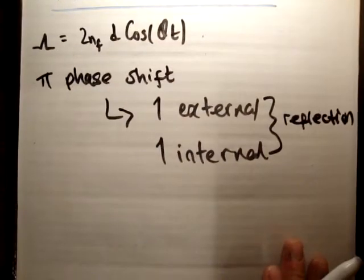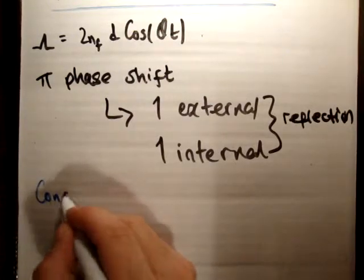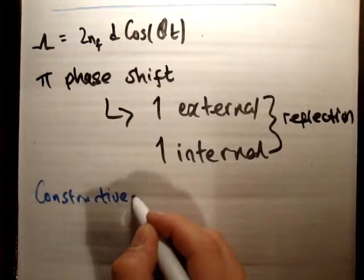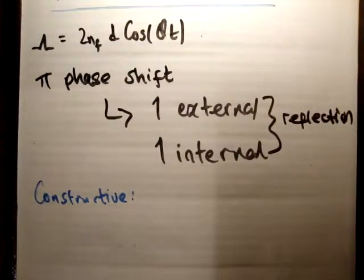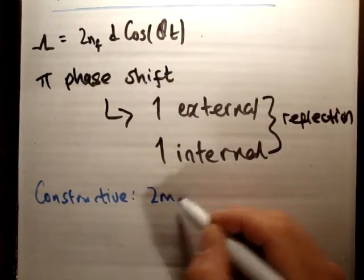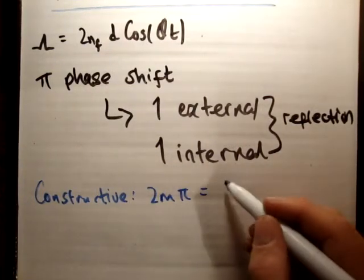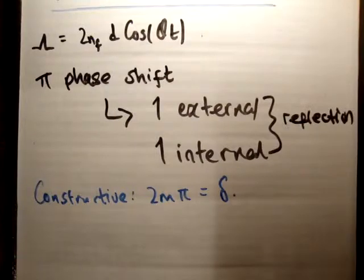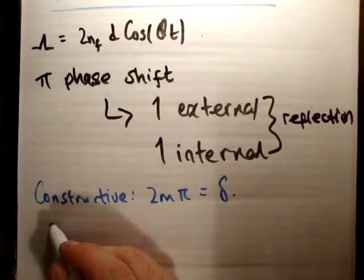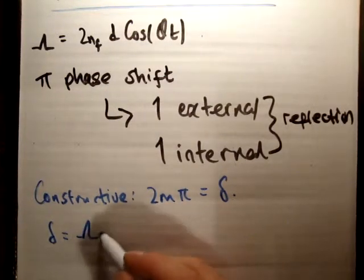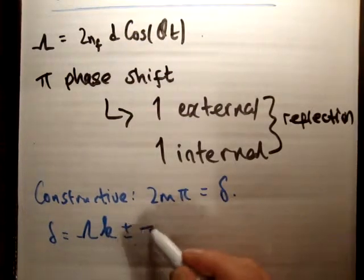So as a result, the condition for constructive interference is 2 times m times pi is equal to delta. And we should know at this stage from our study of optics, that delta is also equal to the optical path difference times the wave number, plus or minus pi.